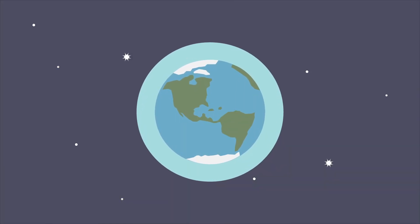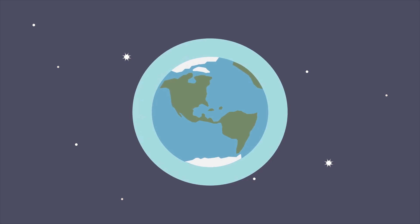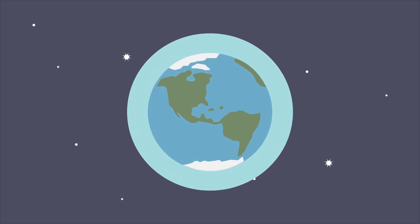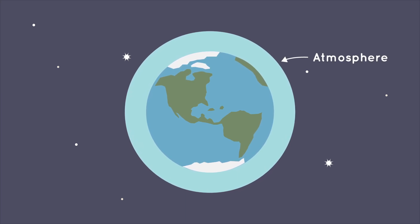The greenhouse effect keeps Earth warm in pretty much the same way. Earth isn't surrounded by glass, but it is surrounded by a jacket of gases called the atmosphere.